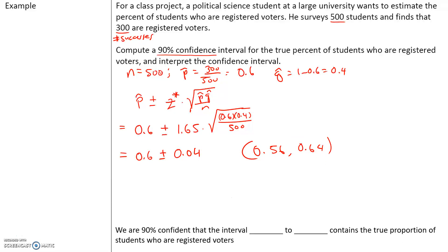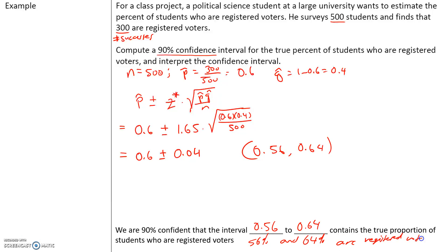So we are 90% confident that the interval 0.56 to 0.64 contains the true proportion of students who are registered voters. In other words, somewhere between 56% and 64% of all students are registered voters, and we can say this with a 90% confidence level.